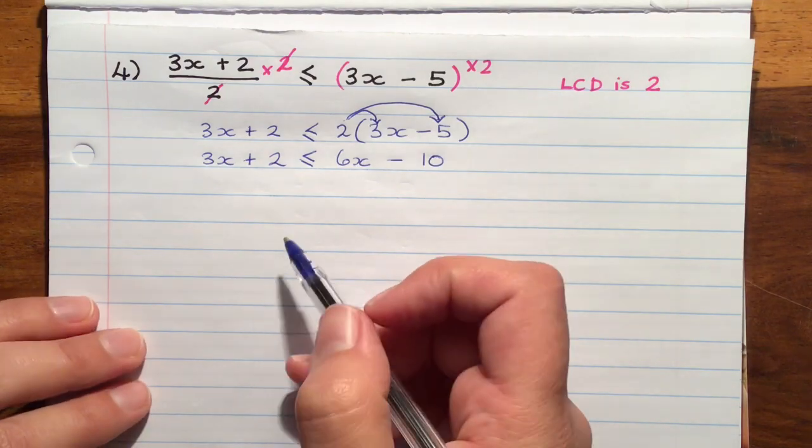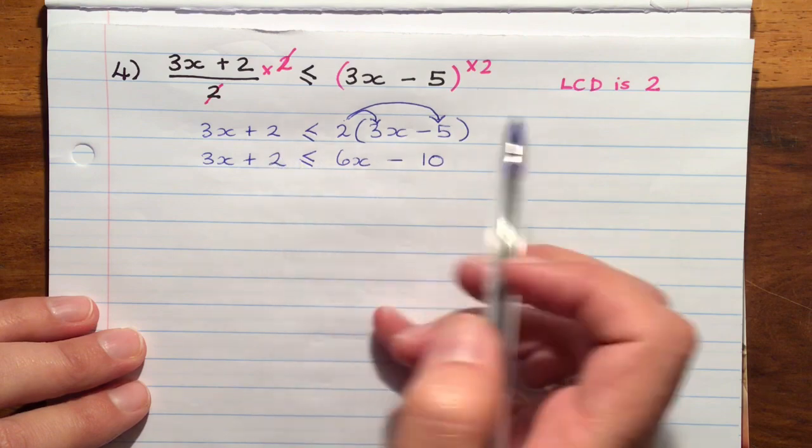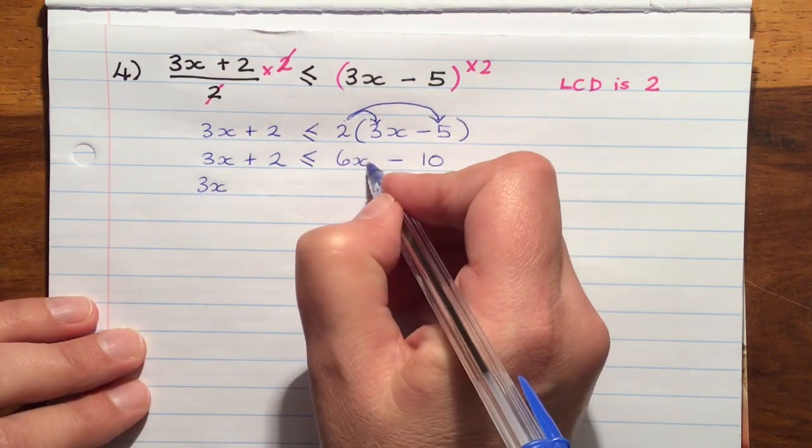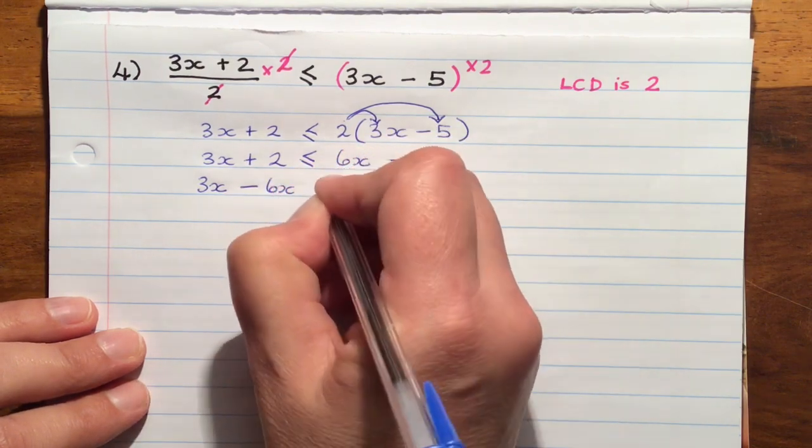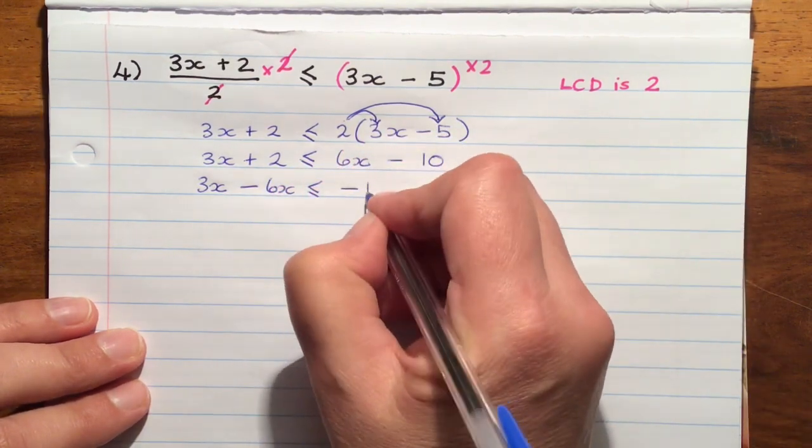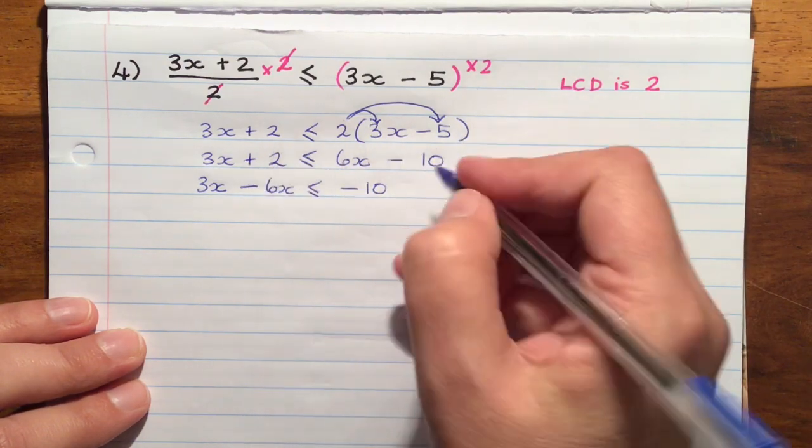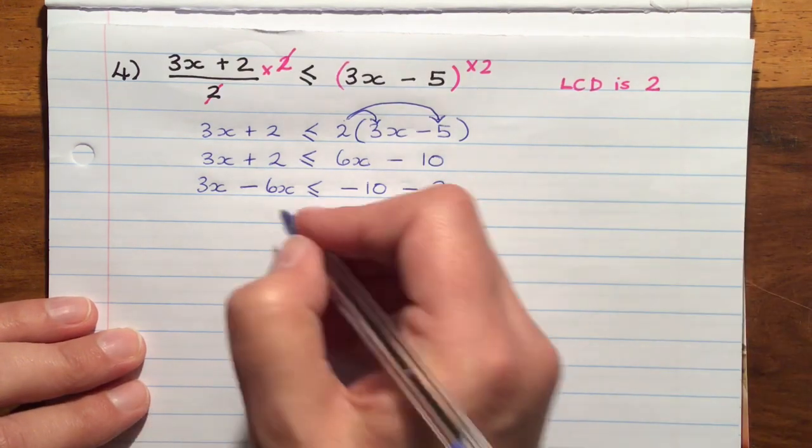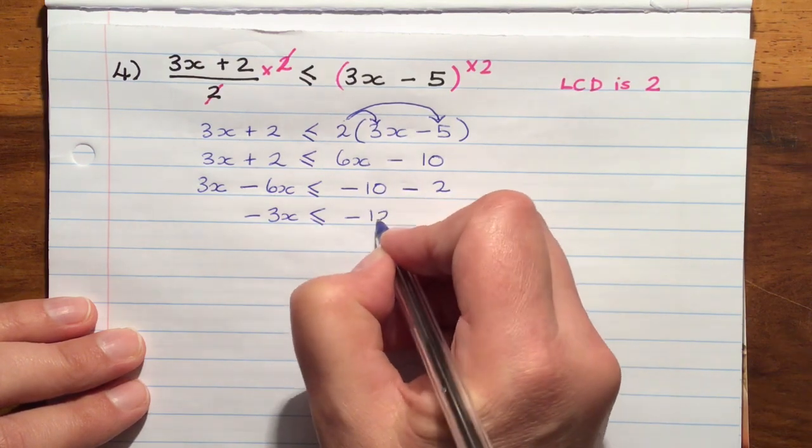Our next step is to get all the x's to be on the left hand side, all the numbers to be on the right. So we're going to use inverse operations with a 6x. When it moves over, this side will become minus 6x. We had negative 10 on the right and we moved over the 2 to the other side, which will become negative 2. So when I simplify that, I've got negative 3x is less than or equal to negative 12.